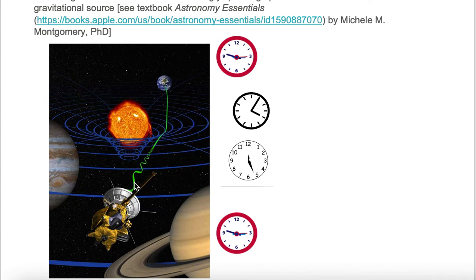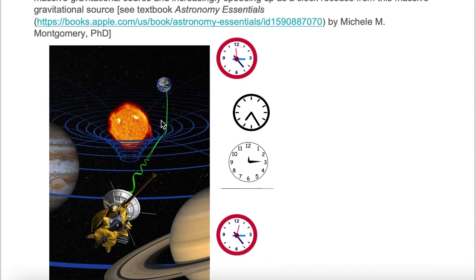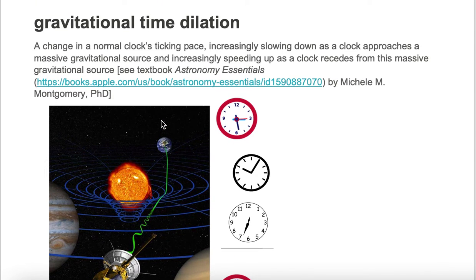The Cassini space probe is sending out this green wave that has to go around the gravitationally massive object called the Sun before it reaches planet Earth. This signal is going to go through what's called a gravitational time dilation.